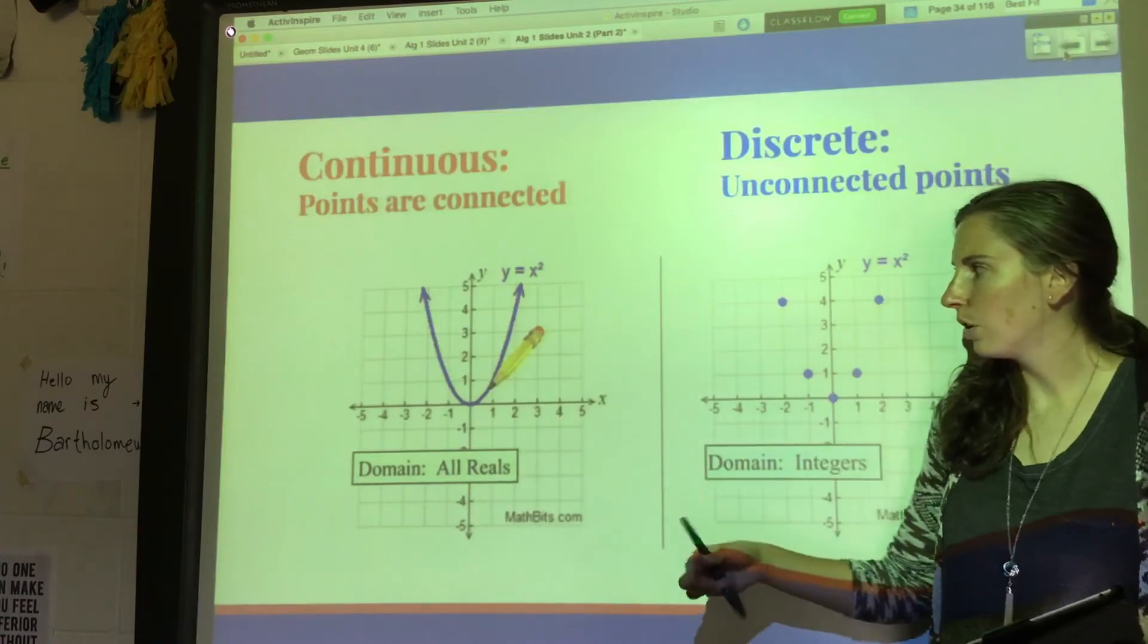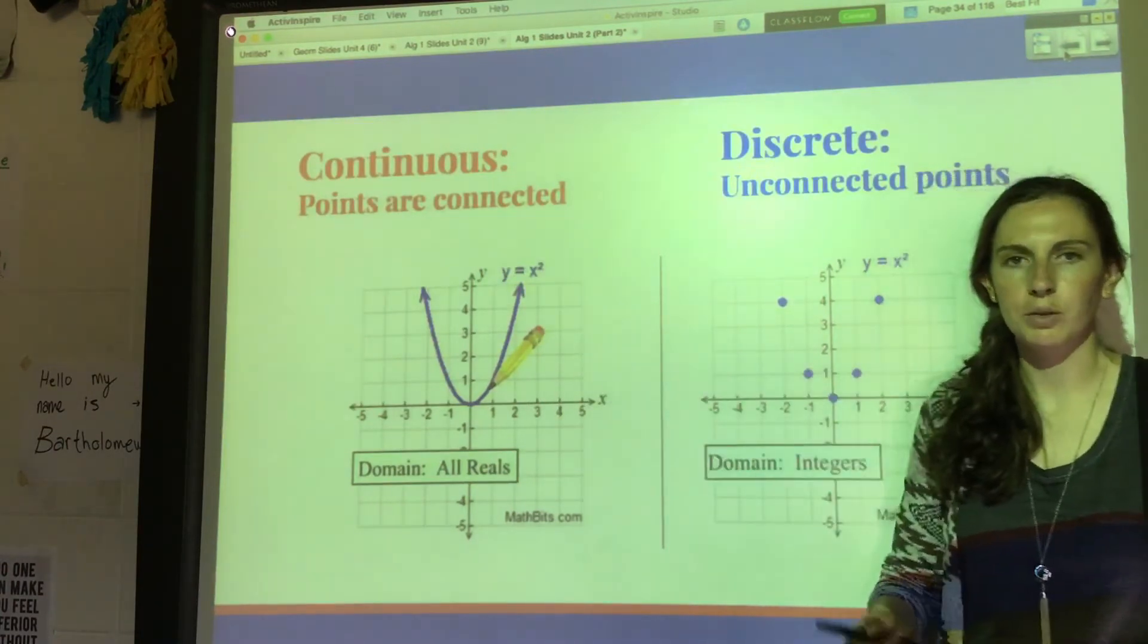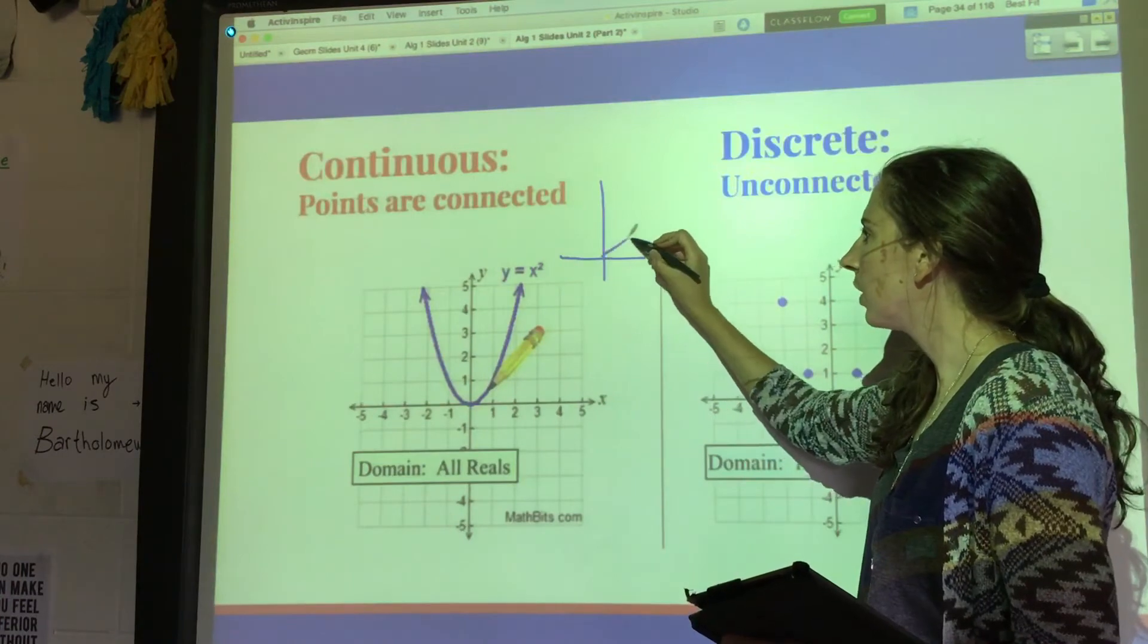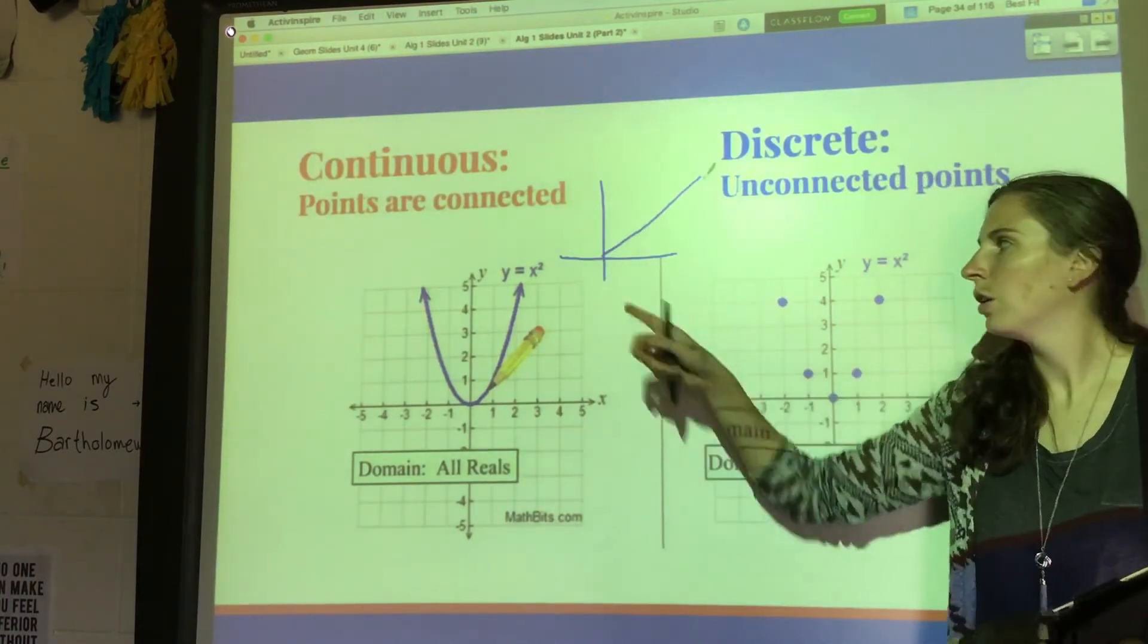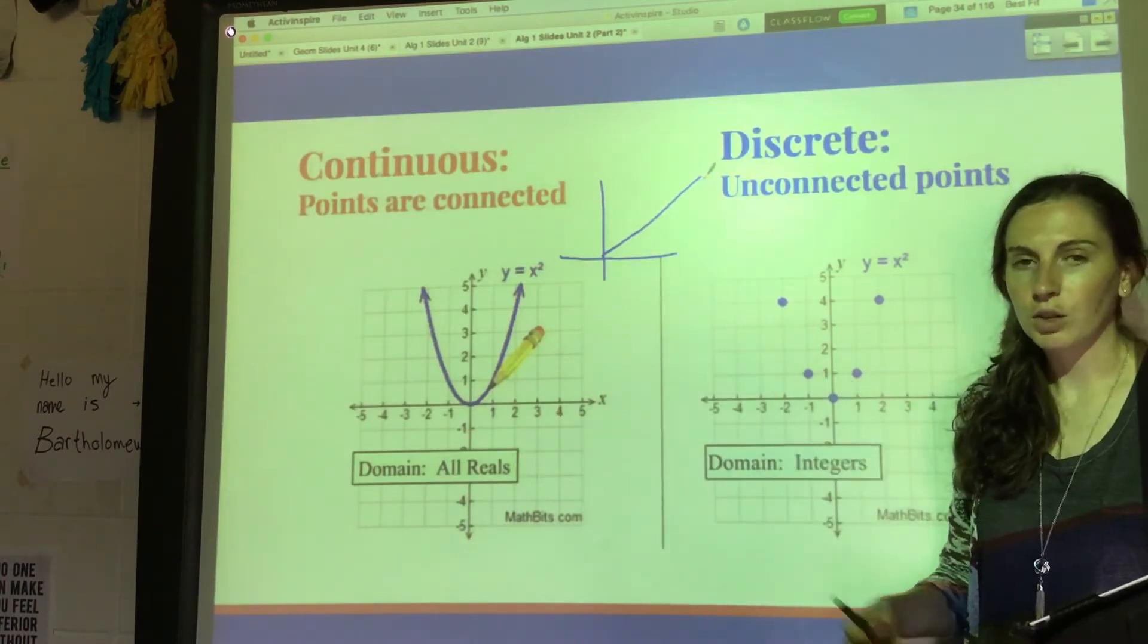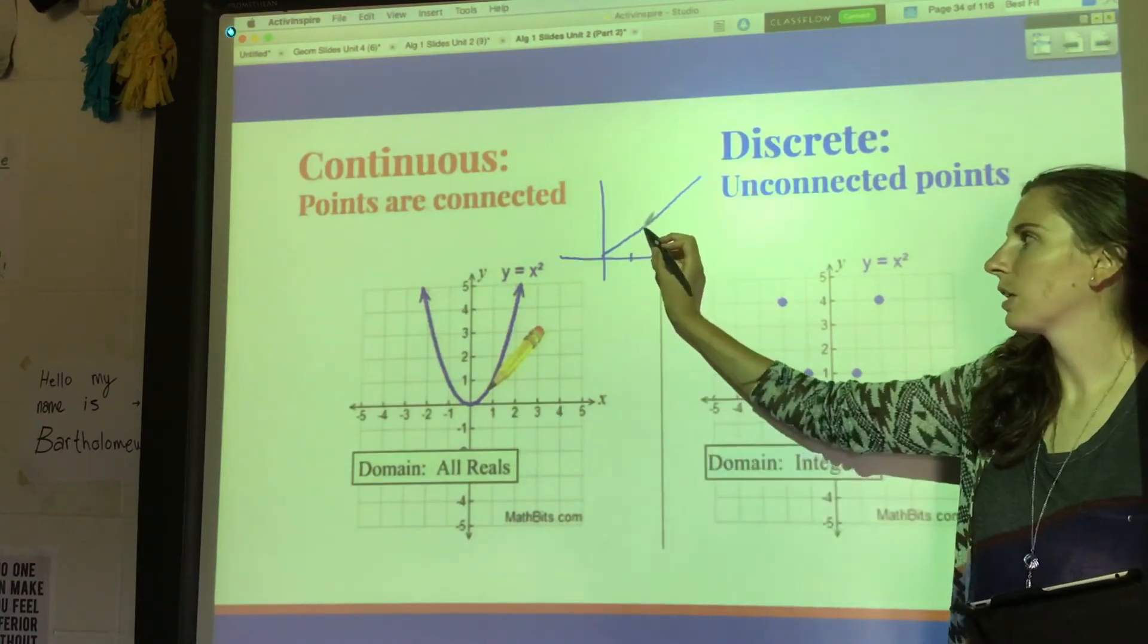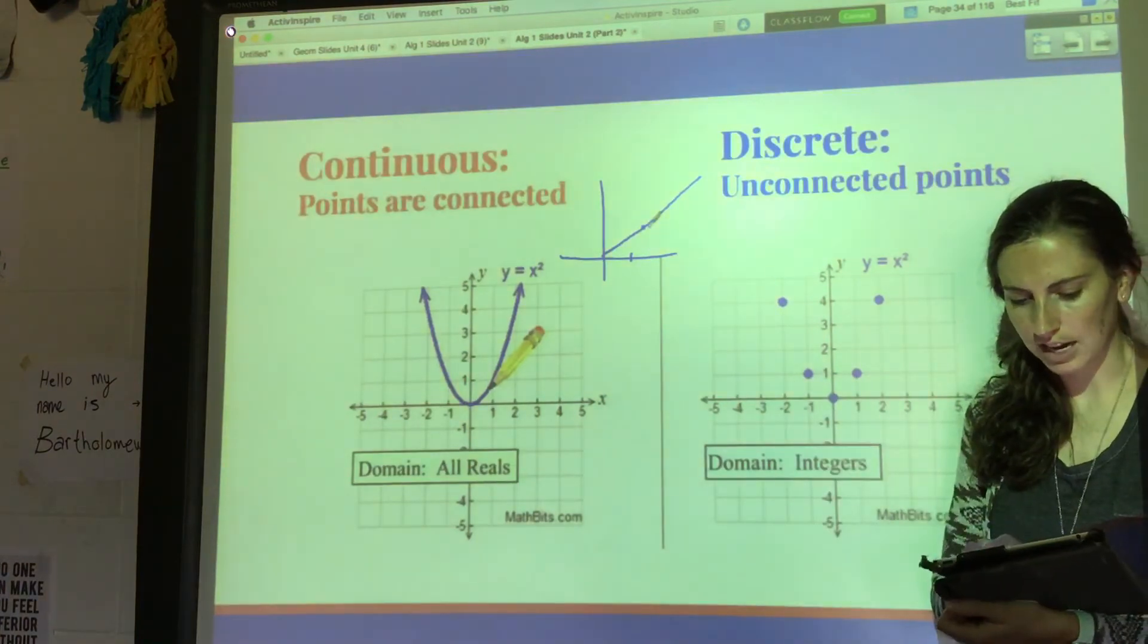as things change. For example, like a person's height over time - that would be a continuous function because I could be like 0.75 of a foot. My height would be a continuous function over time, like I would grow over time and I could have decimals there. Basically you could also have like half of a day or one fourth of a day, you can have like 0.61 of a day.